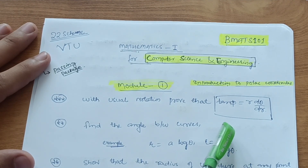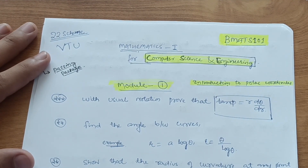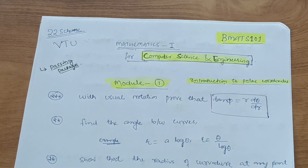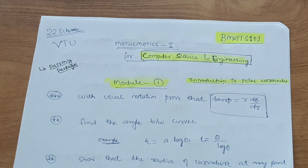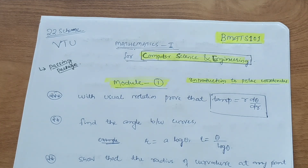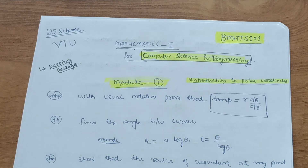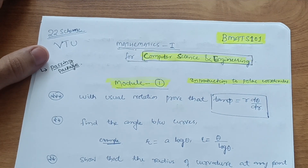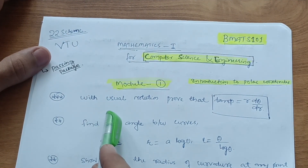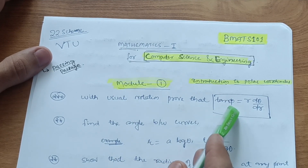Backlog students face many problems in VTU examination. VTU sets unexpected papers for backlog students — the papers should be easy for backlog students, but VTU is making papers as tough as possible. So you have to be very serious in this examination, otherwise you will lose interest later on. Focus on this particular question: with usual notation, prove that tan φ = r dθ/dr.